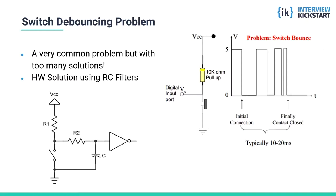Let's now look at another example — a very common problem in any electronic product. There is a mechanical switch which the user operates, and typically being mechanical with springs, when you press it it doesn't give a stable signal immediately. This is called bouncing. The picture shows that when the button is pressed, instead of a steady five volts for the duration it is pressed, it shows many transitions from five volts to zero volts and vice versa, looking like a pulsed waveform instead of a flat line.